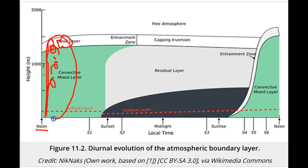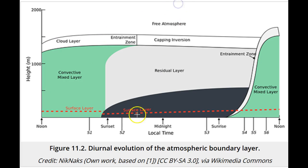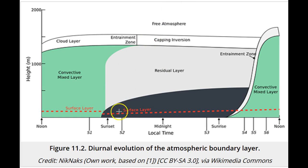As the sun sets later in the day, there is less solar energy to power the convection that stirs the mixed layer, and the boundary layer collapses, leaving behind a residual layer that contains the mixed layer air that was left over. Emissions from the surface keep pouring into the boundary layer, but the boundary layer height is much lower.